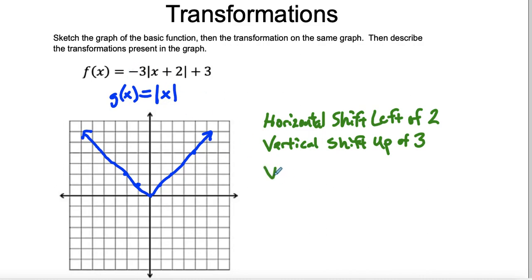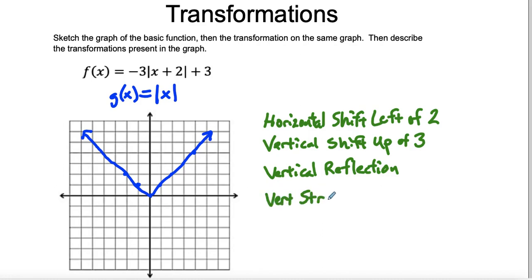The negative is a vertical reflection, which just means that we're going to flip the function upside down. And then we have a vertical stretch by a factor of three. We say that because it's multiplied — you would multiply the y-values by three.